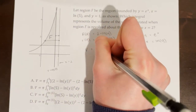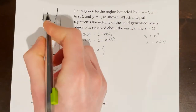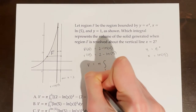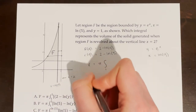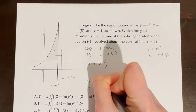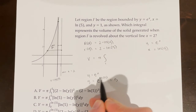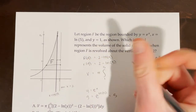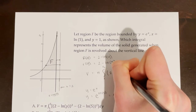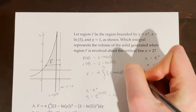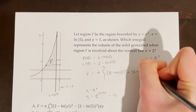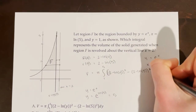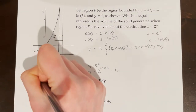The volume integral goes from y = 1 to y = 5. The upper bound comes from substituting x = ln(5) into y = eˣ: y = e^(ln 5) = 5. So the integral is pi times the integral from 1 to 5 of [(2 − ln y)² − (2 − ln 5)²] dy. This matches answer choice A.